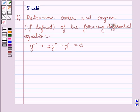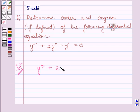Let us now start with the solution. The given differential equation is y''' + 2y'' + y' = 0.